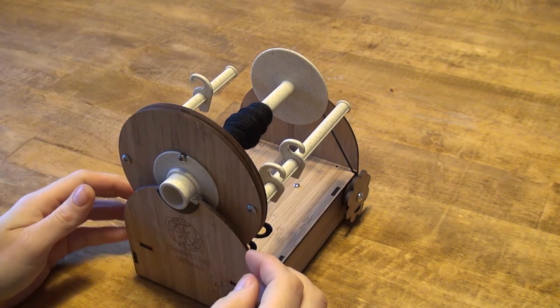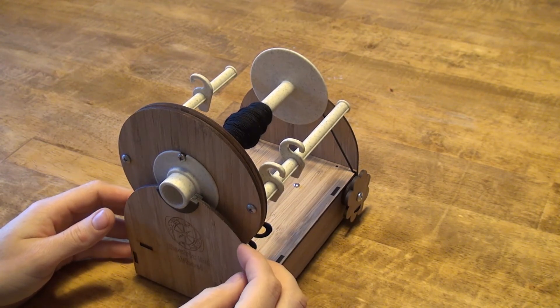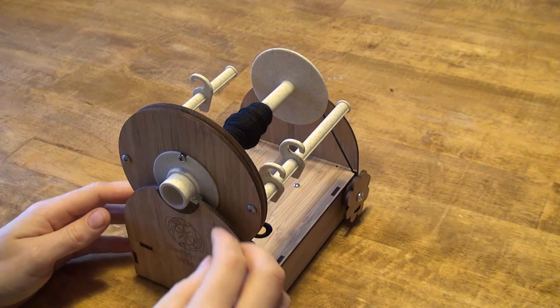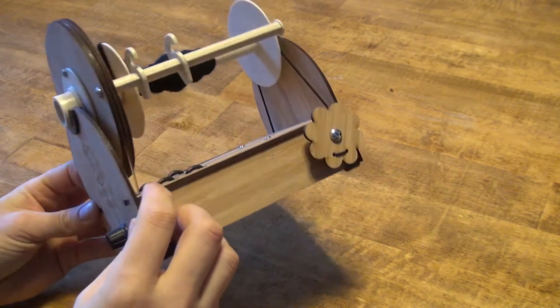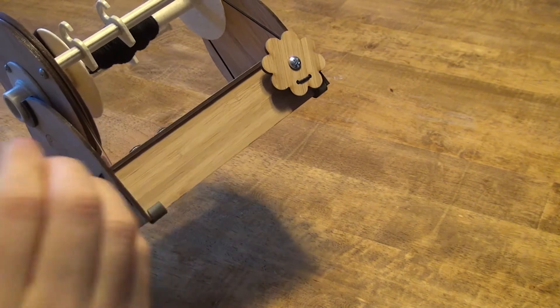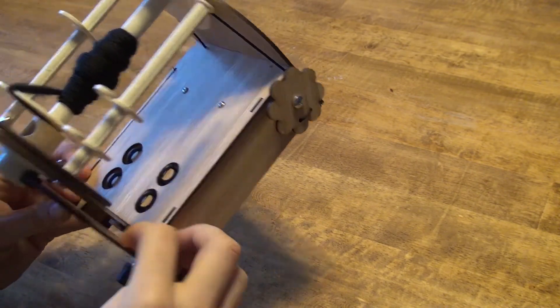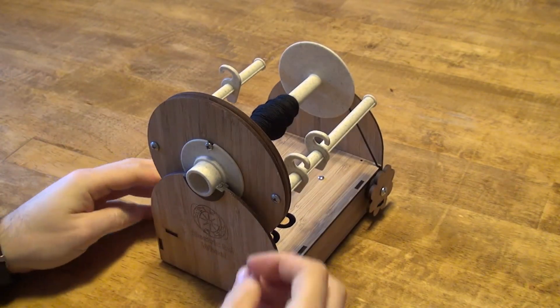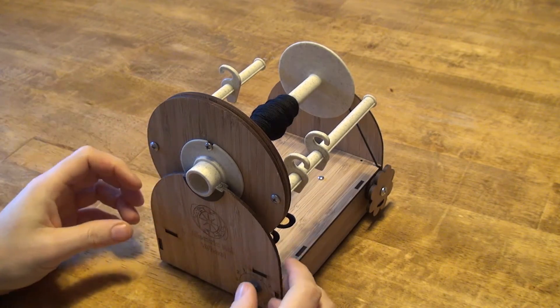But super glue is a little bit brittle against sudden jarring, which is what happens during shipping. So what we're thinking happens is there's a sudden jar in shipping and that breaks this front panel off and people find that it slides off. That definitely shouldn't happen.